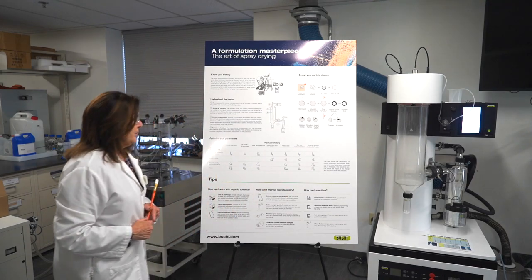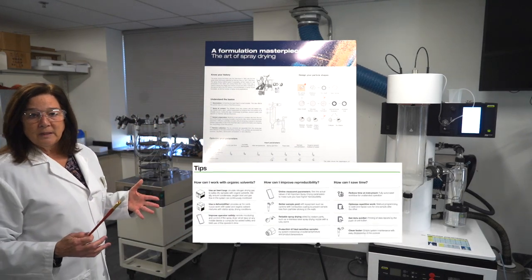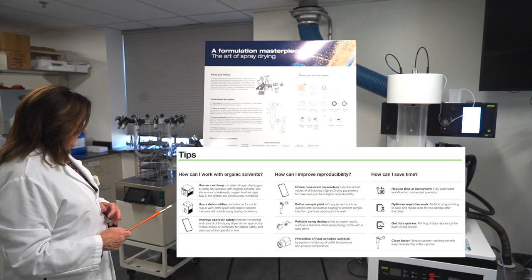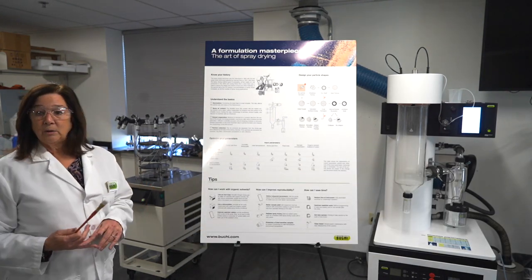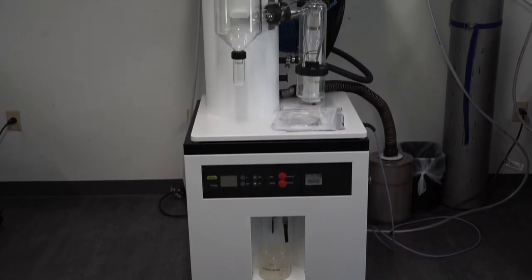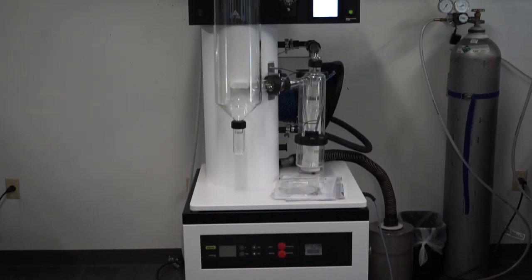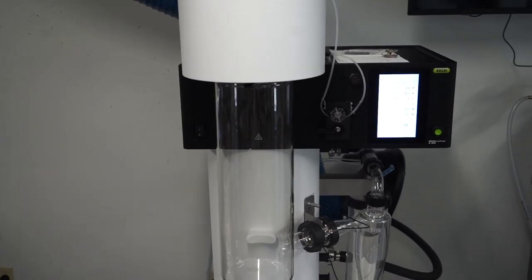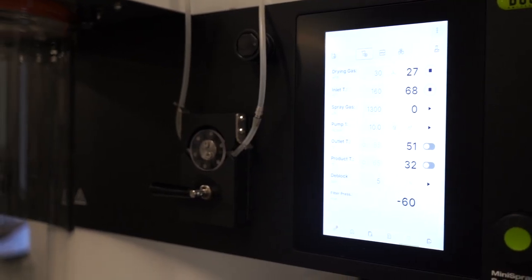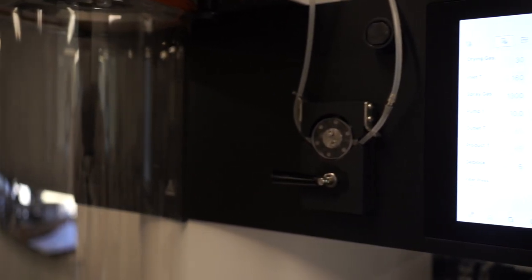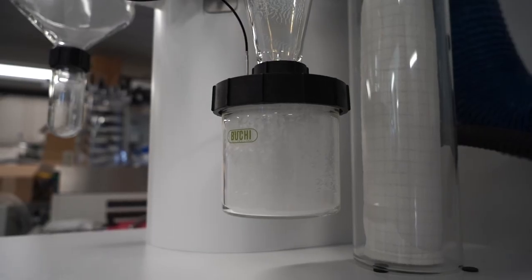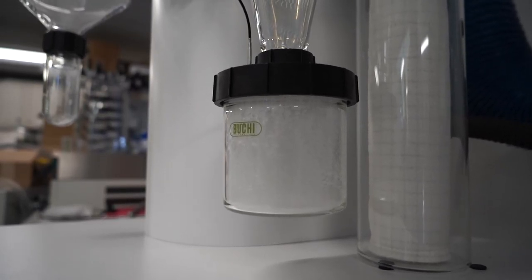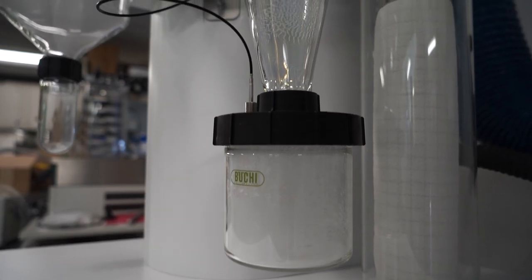To finish up, we're going to touch on the nuances and added benefits of the S300 system. We have an updated inert loop and dehumidifier, and we have a mobile app. For reproducibility, all of the parameters can be seen within our new interface. One really nice new feature is the fact that you can measure the outlet temperature and the product temperature within the collection vessel.